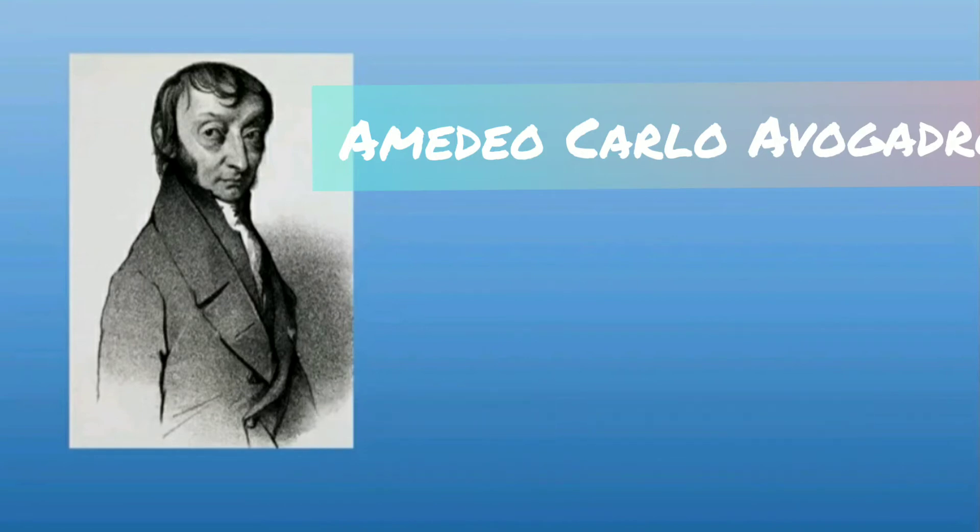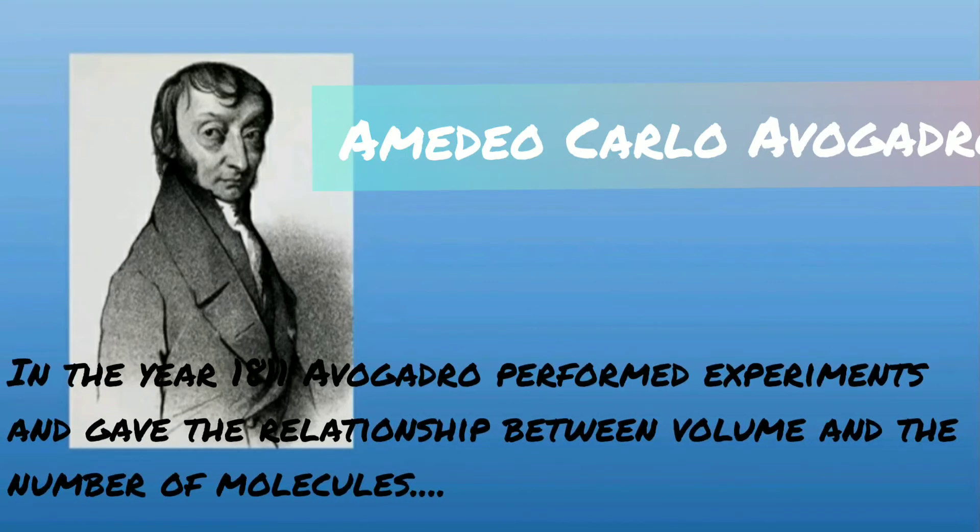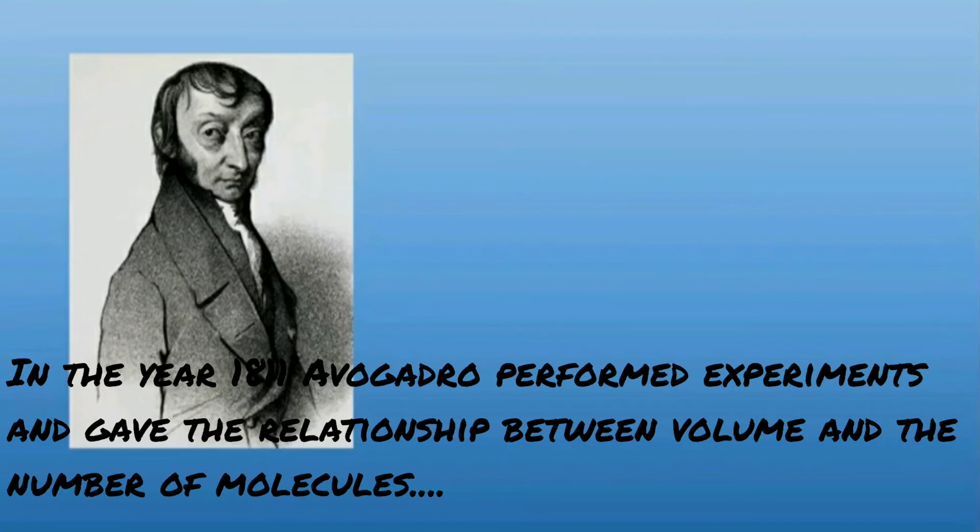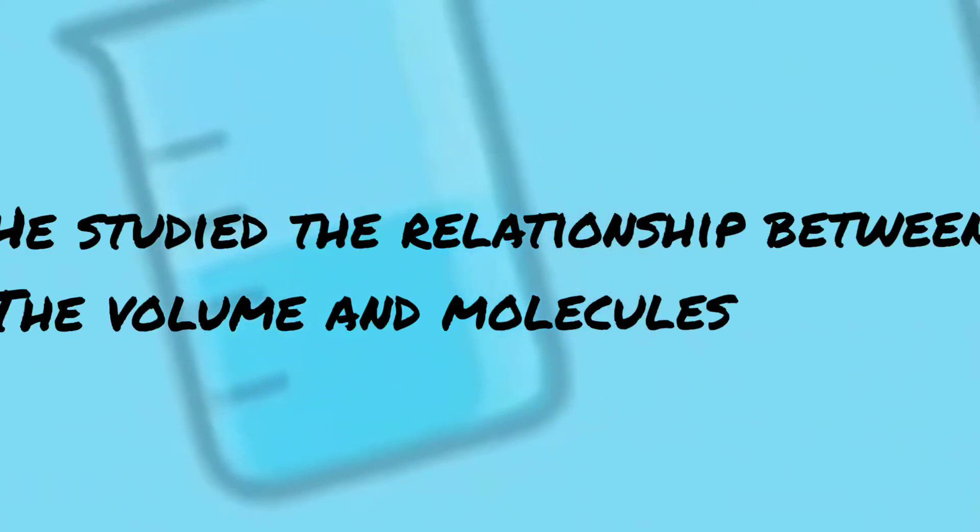To understand, we must know about the Italian chemist Amadeo Avogadro. In the year 1811, he performed experiments and came to a conclusion about the relationship between the volume and the number of molecules in gases.